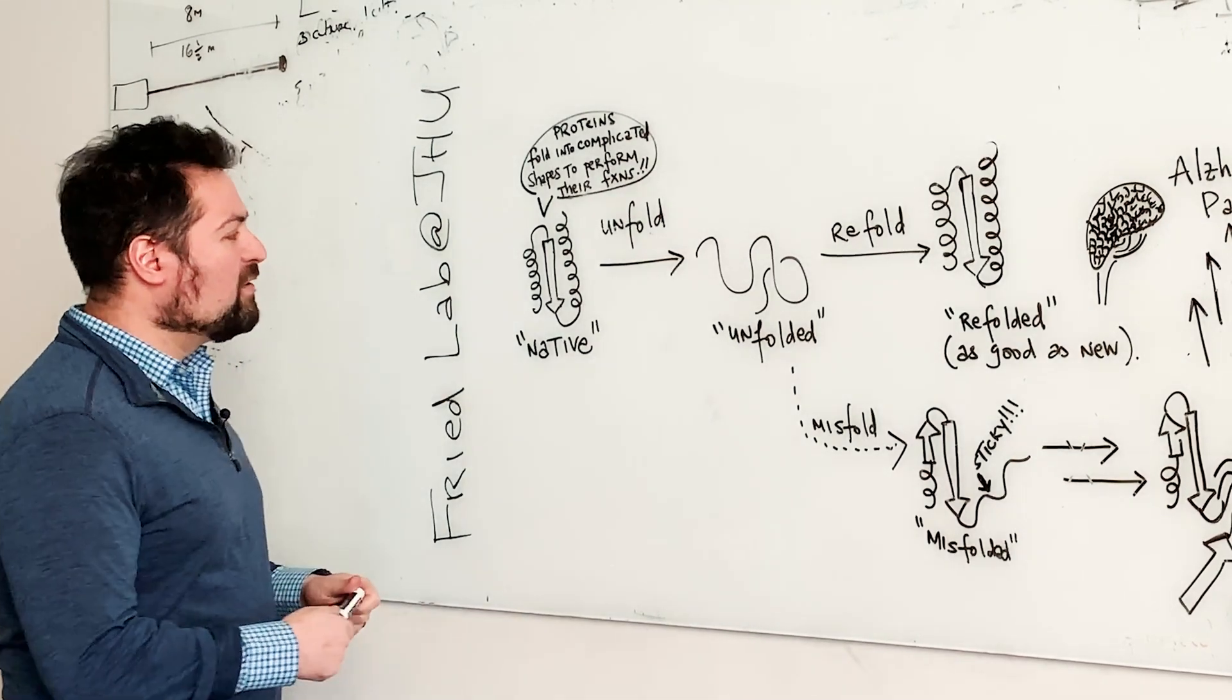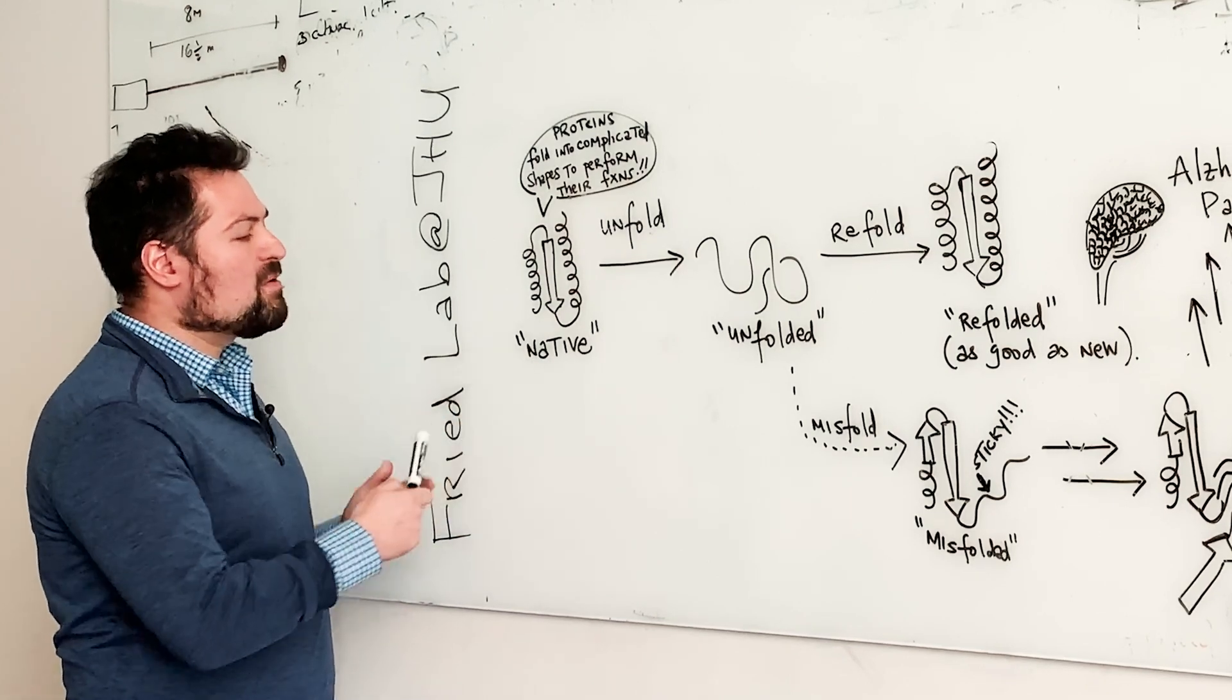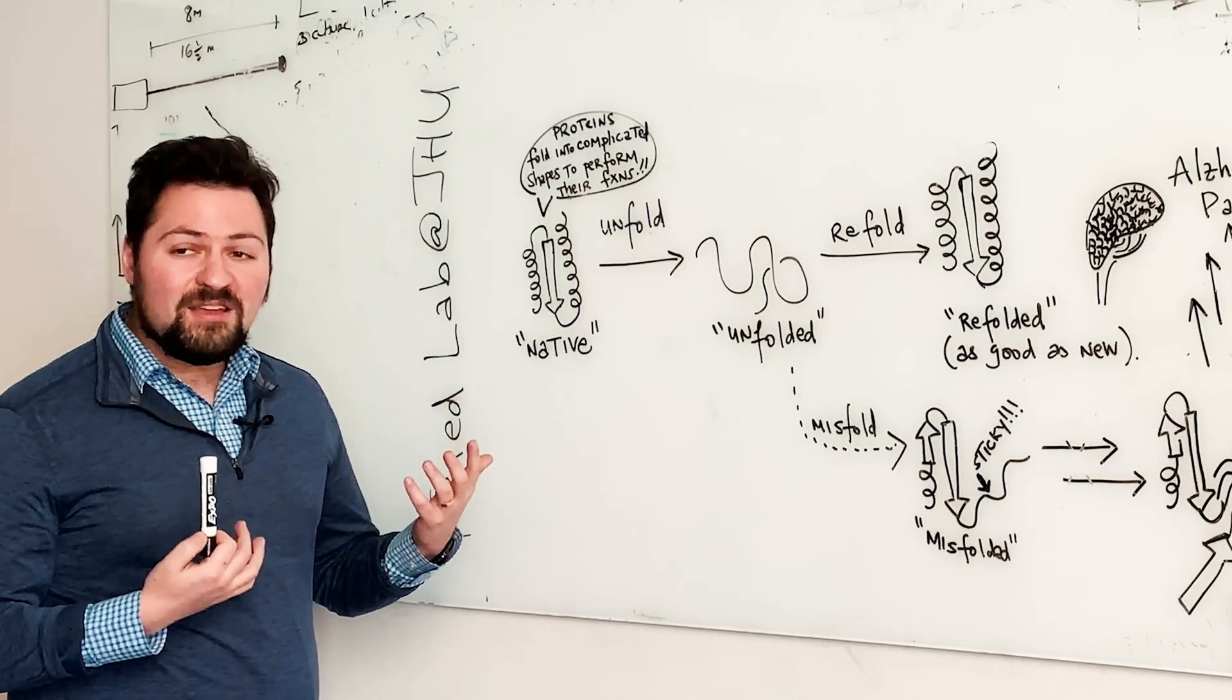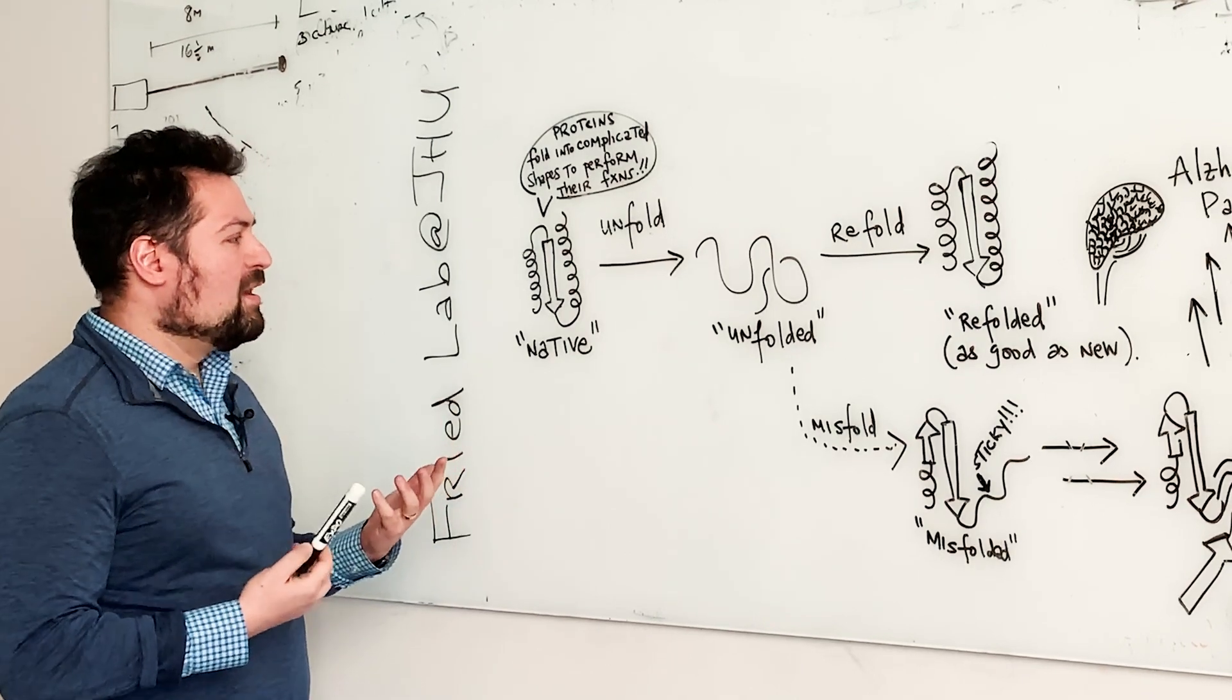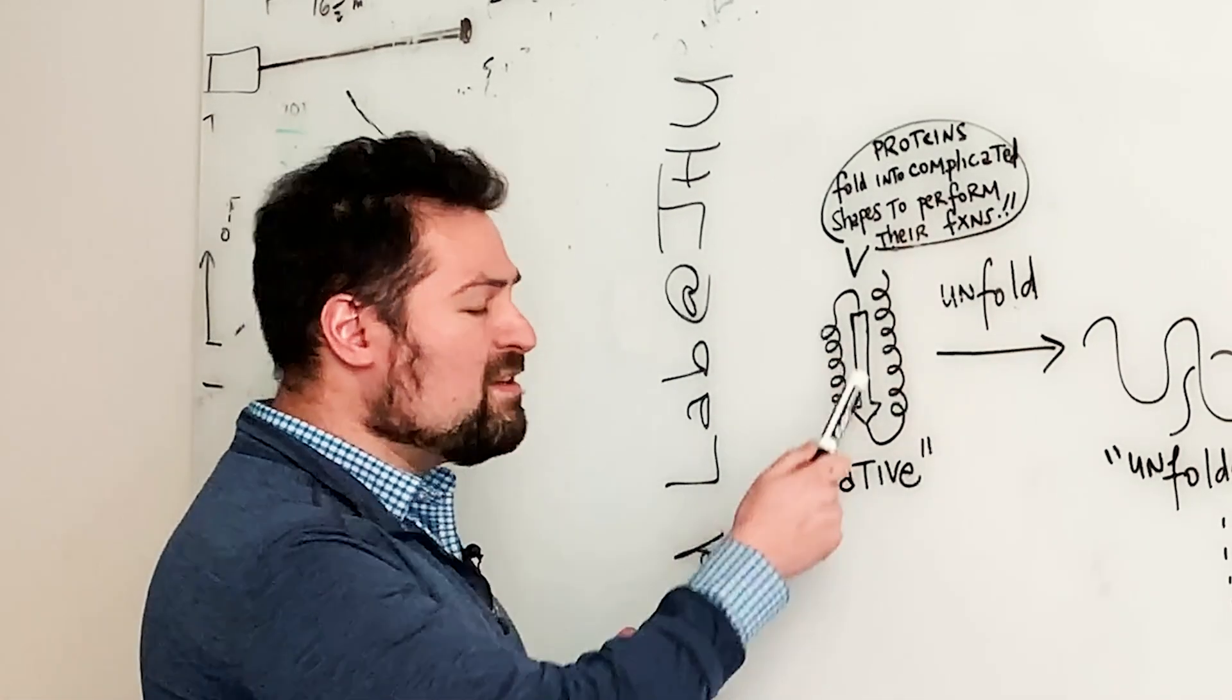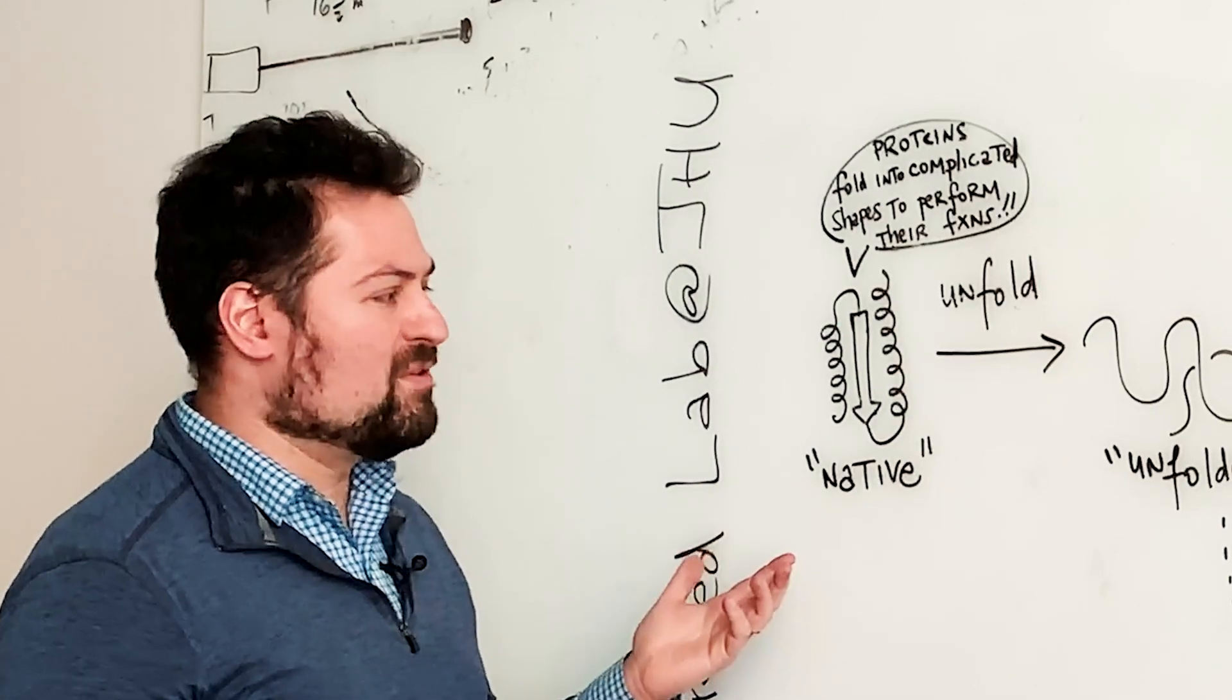Our cells are filled with these amazing molecules called proteins, and proteins are responsible for carrying out all the functions that our cells need in order to survive. In order to perform their functions, proteins need to fold up into a really specific three-dimensional shape that we call the native conformation of the protein.